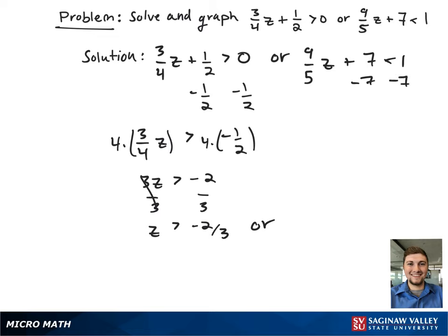Moving to the right hand side, we're going to subtract both sides by 7. This gives 9/5 z is less than negative 6.